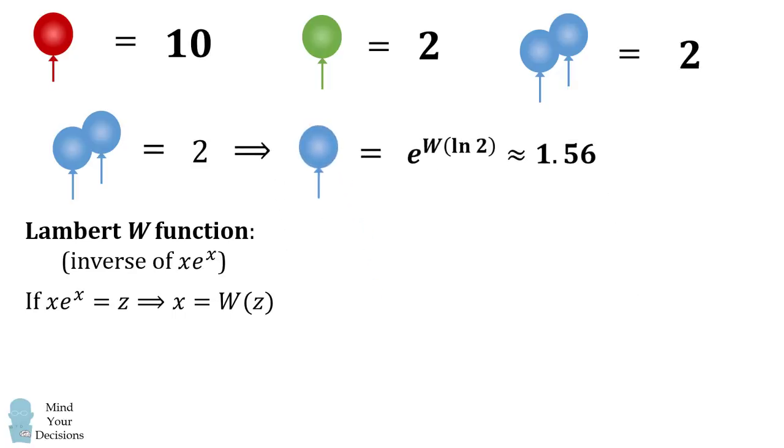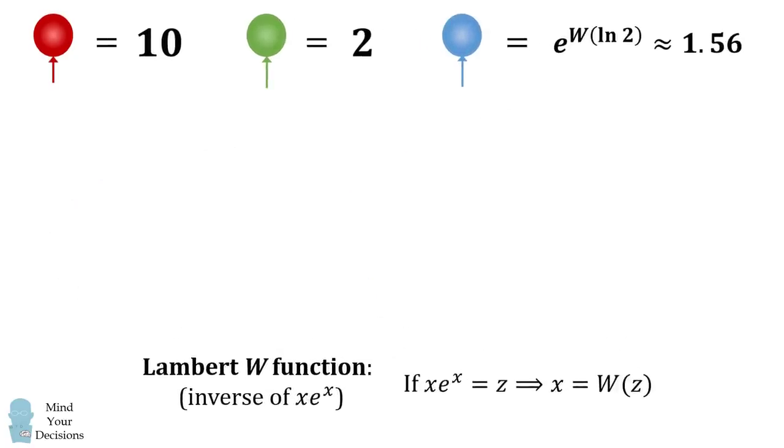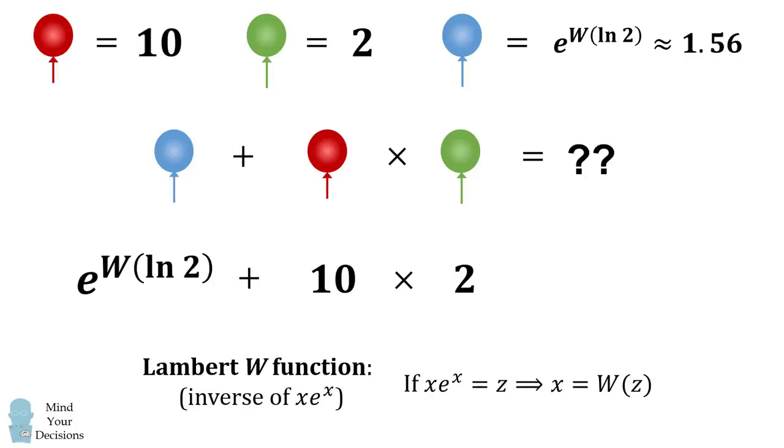So we now take this value for the single blue balloon, and we then need to evaluate a blue balloon plus a red balloon multiplied by a green balloon. So we substitute in our values, and we get this is approximately equal to 21.56. And I believe this is the real answer to this puzzle. Did you figure it out?